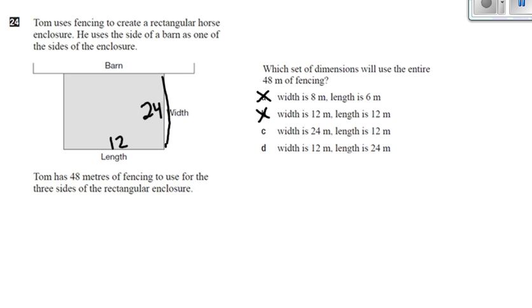What if the width is 24 and the length is 12? 24 plus 12 plus 24 is 60, that's too much. So I really hope the answer is D. What if the width is 12 and the length is 24? 12 plus 24 plus 12, that's 48 meters so the answer is D.